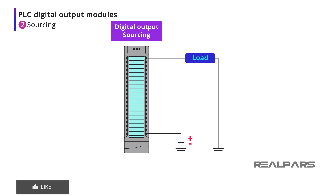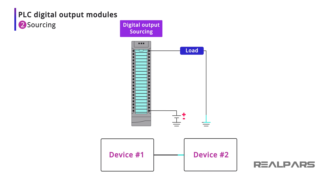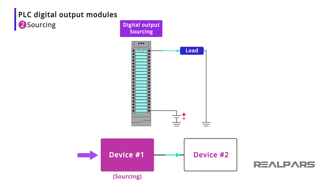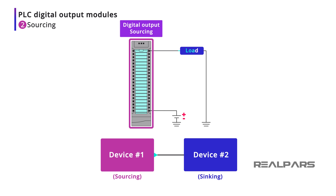If you recall, earlier we said that when there are two devices with current flowing between them, one device will be sourcing and one will be sinking. In our example, the output module is the sourcing device, and the relay is the sinking device.